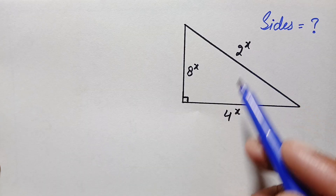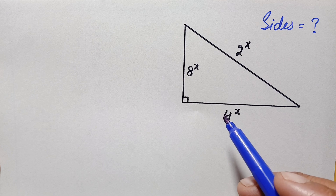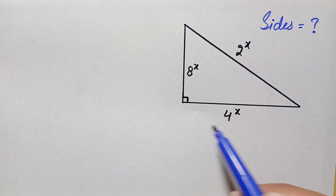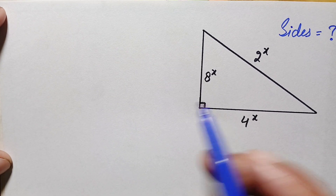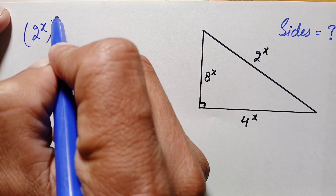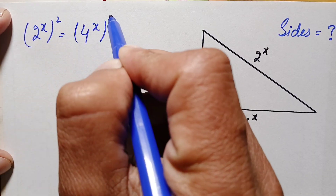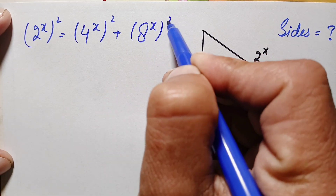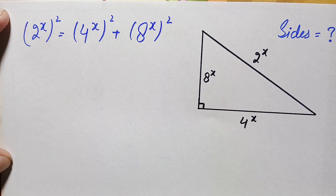To find out these three sides, first we need to find the value of x. Since this is a right angle triangle, we can apply the Pythagorean theorem. By the Pythagorean theorem, the square of the hypotenuse equals base squared plus perpendicular squared. From the figure, the hypotenuse is 2^x, the base is 4^x, and the perpendicular is 8^x.